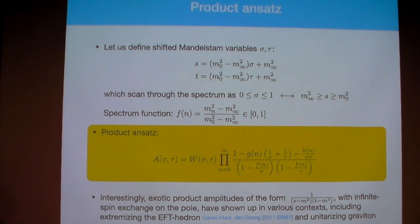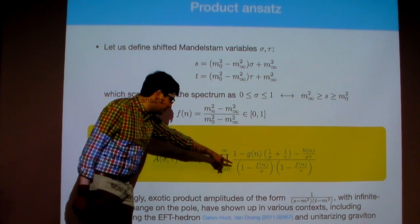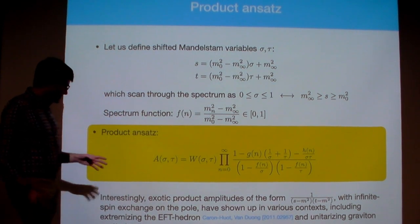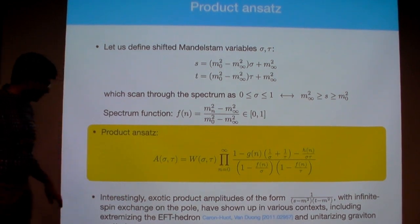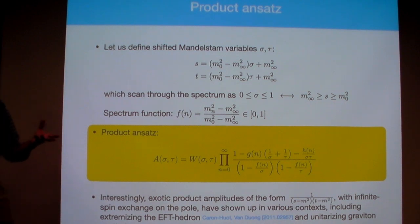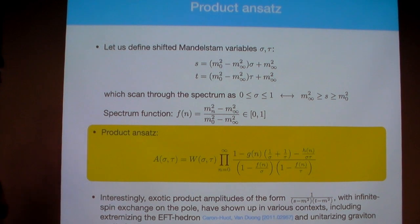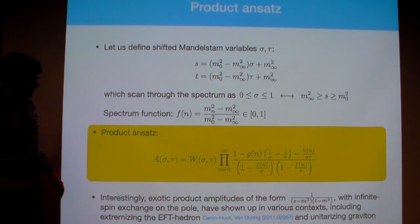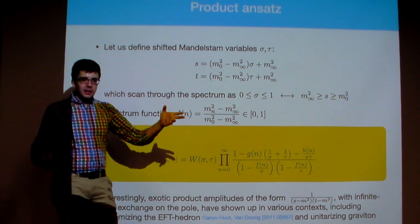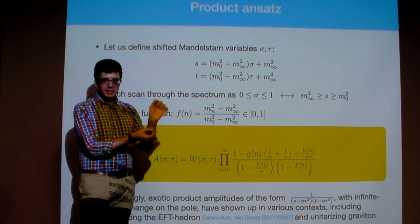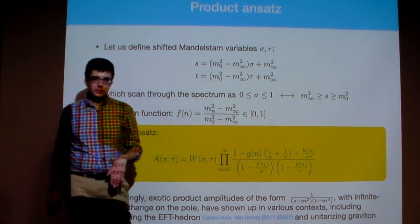What's interesting is that even though each individual term in the product has the exotic structure of an infinite number of spins, there's also infinite cancellation, which leaves us with an exactly finite number of spins on each pole. That infinite cancellation is accomplished by the functions that live in the numerator. So that's what we're going to do next.